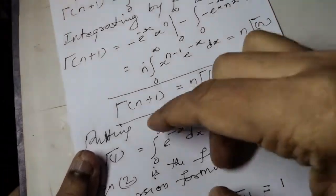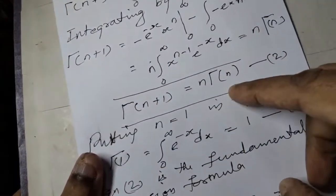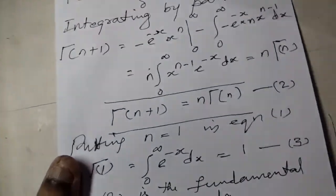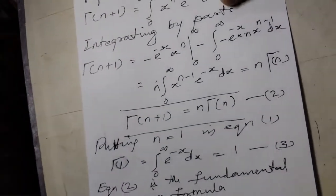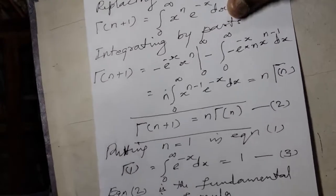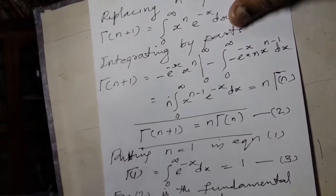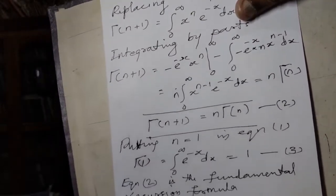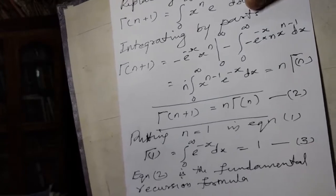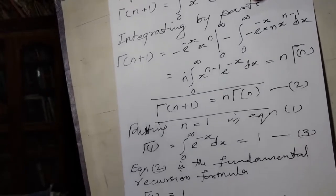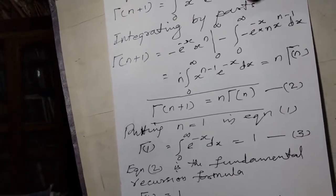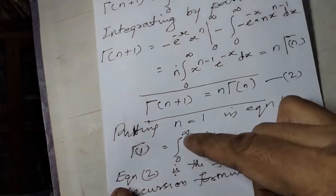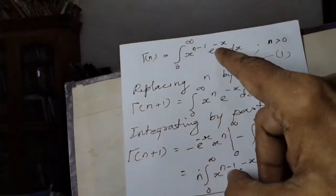This is the fundamental recursion formula for the gamma function. Using this, we can proceed to compute specific values starting from n equals 1.